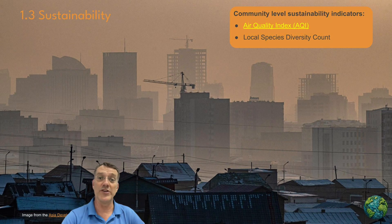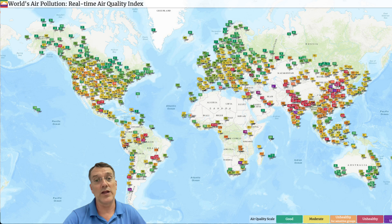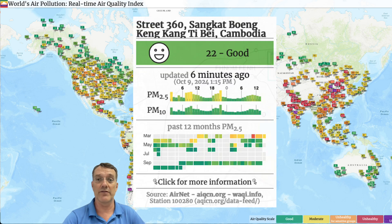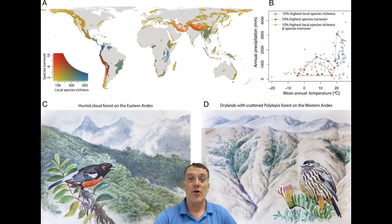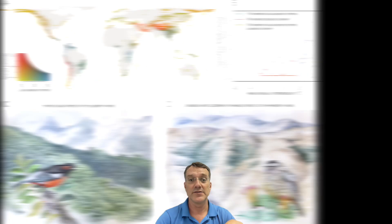At the community or municipal level, we might find the AQI, or the Air Quality Index. This is a measure of the level of air pollution wherever you live. We might also find local species diversity counts, which help us assess the biodiversity within a particular area.